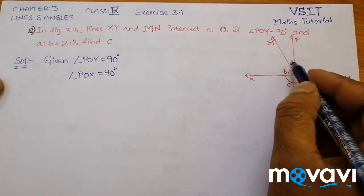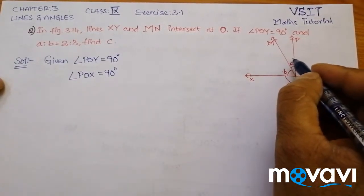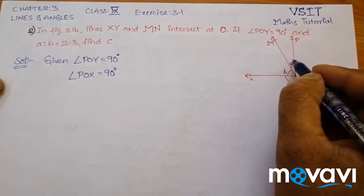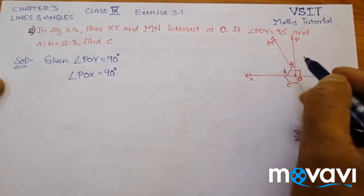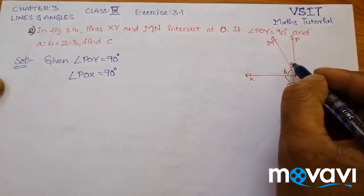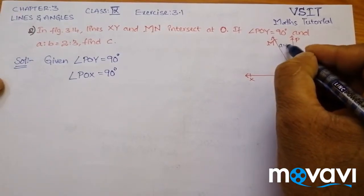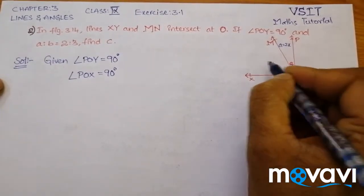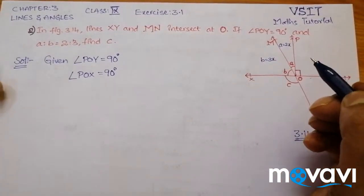Now what is angle A? We have already discussed that if there is an angle X, then A will be twice angle X, that is 2X. So A equals 2X and B equals 3X, thrice the given angle.